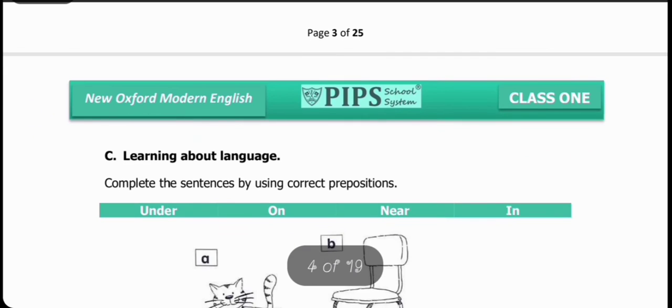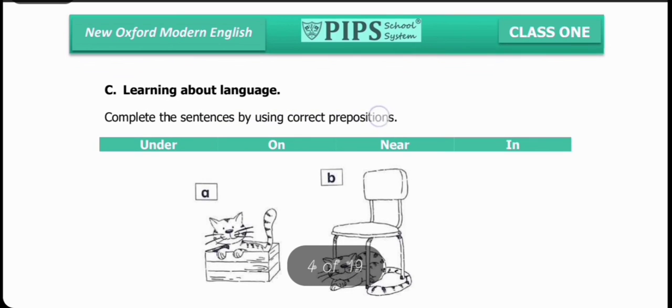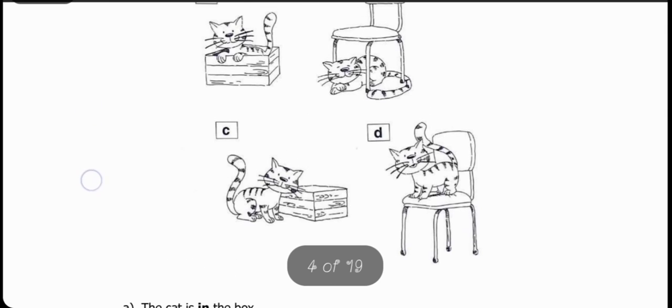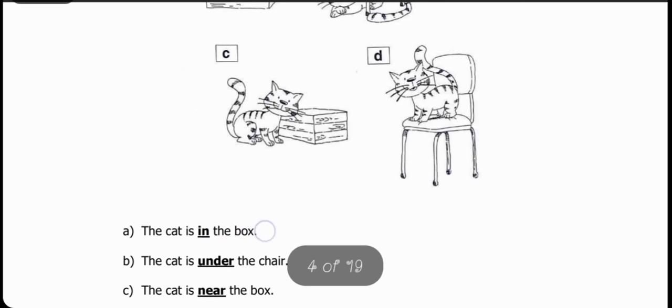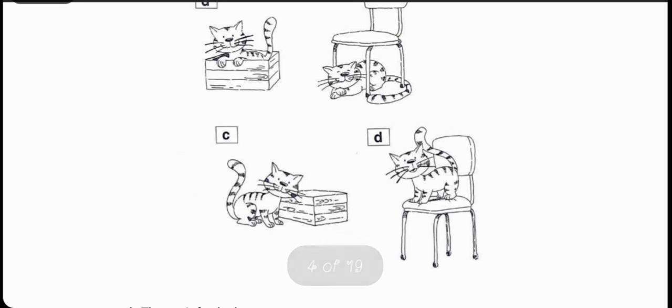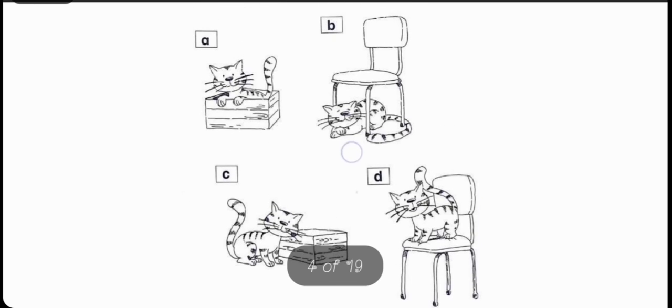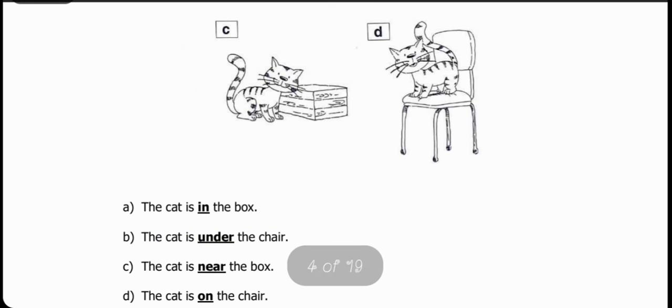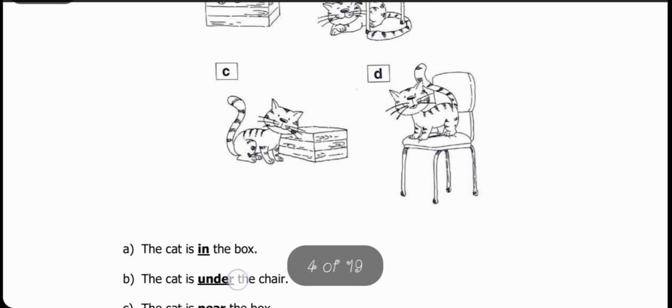So students, next question is Learning about Language - complete the sentences by using correct prepositions. First picture: This picture shows a box and the cat is inside that box. The cat is blank the box. The word used for inside is 'in'. The cat is in the box. Second picture: This is a chair and the cat is under the chair. The cat is blank the chair. The word used for under is 'under'. The cat is under the chair.